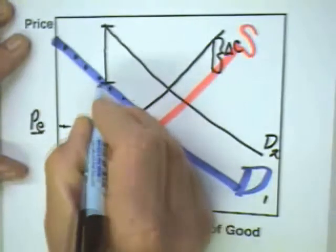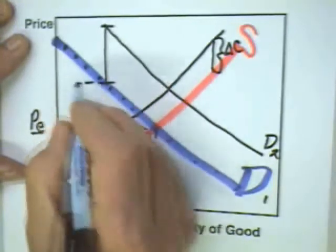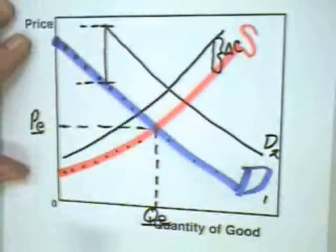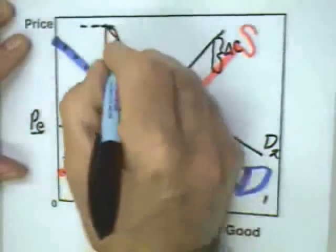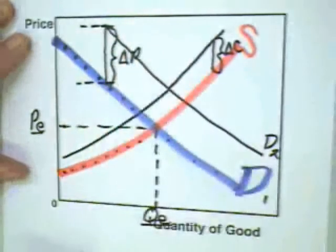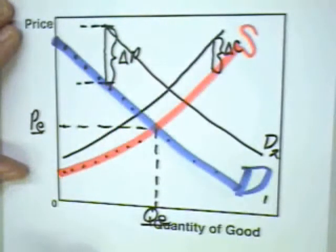Without the feature, the consumer was willing to pay something, a price at this level. With the new feature, they're willing to pay more. This vertical distance is the change in price that consumers are willing to pay, and to our way of thinking, that indicates a price equivalent to the added value of the product.